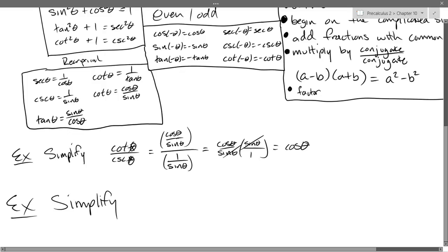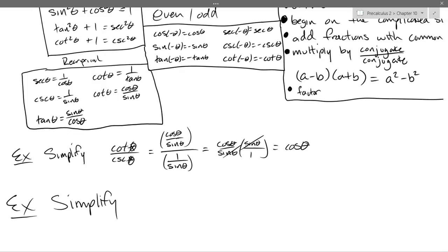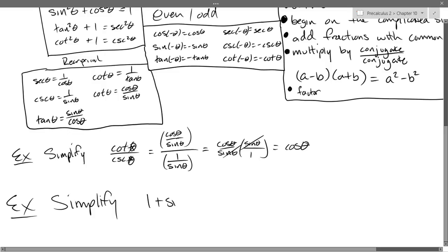So we'll start with (1 + sin u) / sin u + cos u + cot u − cos u / cos u.